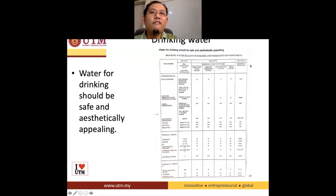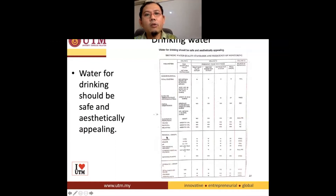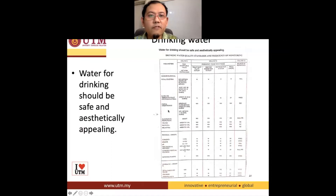There are four components in the Guidelines for the Drinking Water. The first one is the parameters. They list down all the parameters needed to be checked — like coliform, turbidity, color, and pH itself. Those are the parameters that need to be checked.